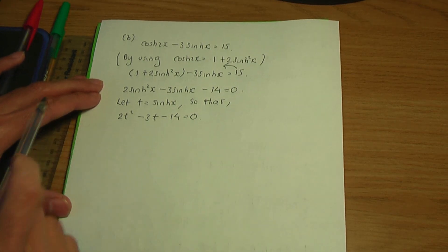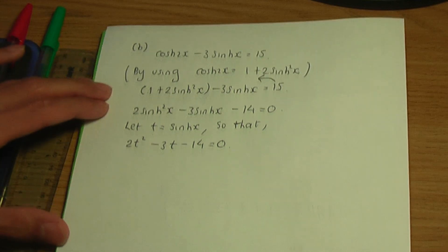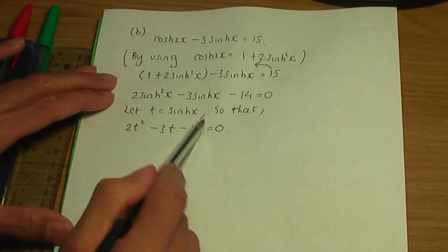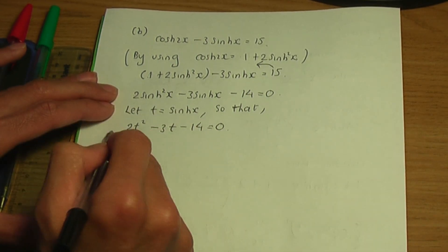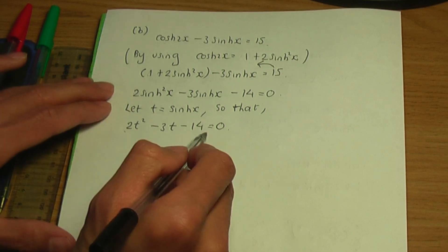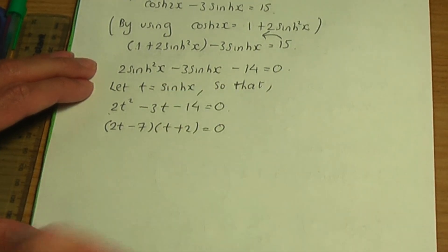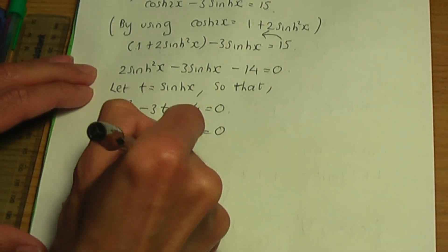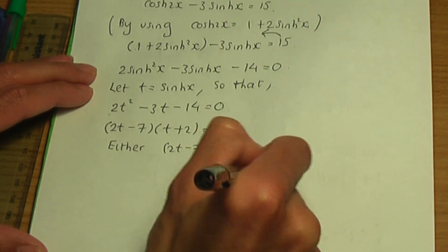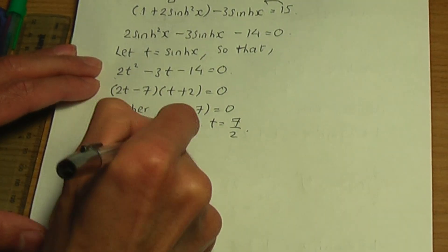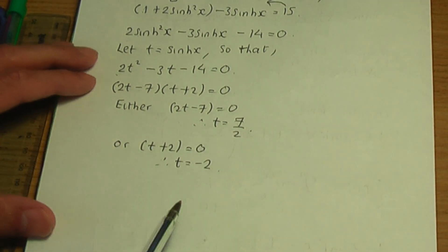This quadratic can be factorised as (2t minus 7)(t plus 2) equals 0. This gives two values of t: either 2t minus 7 equals 0, so t equals 7 over 2, or t plus 2 equals 0, so t equals minus 2.